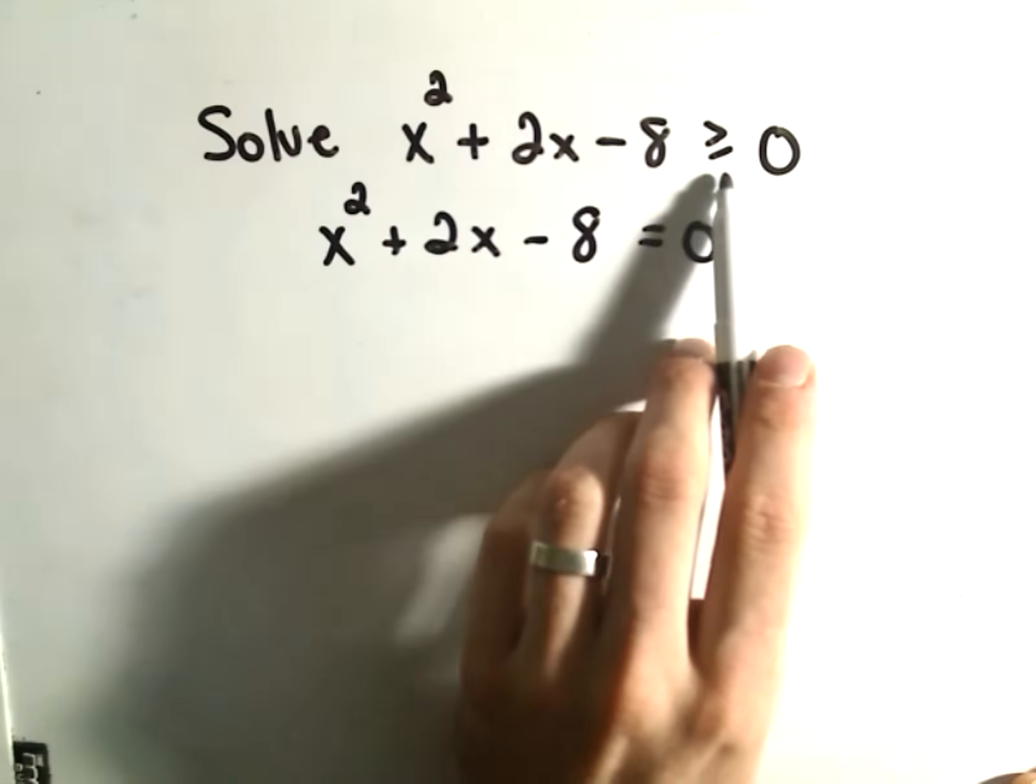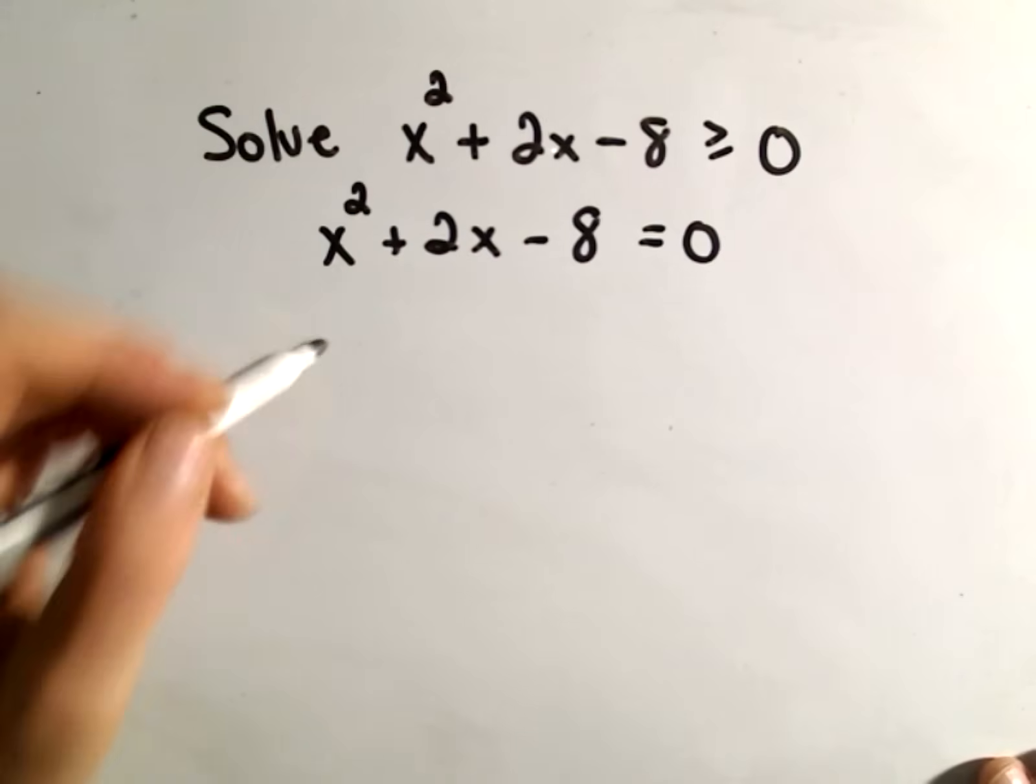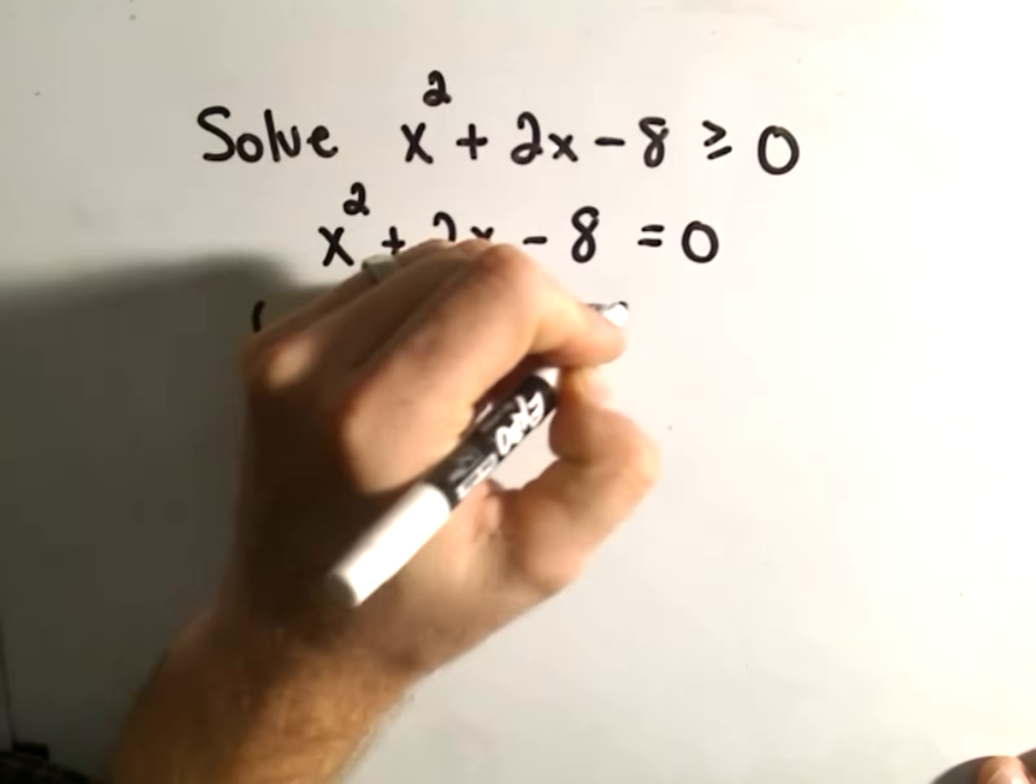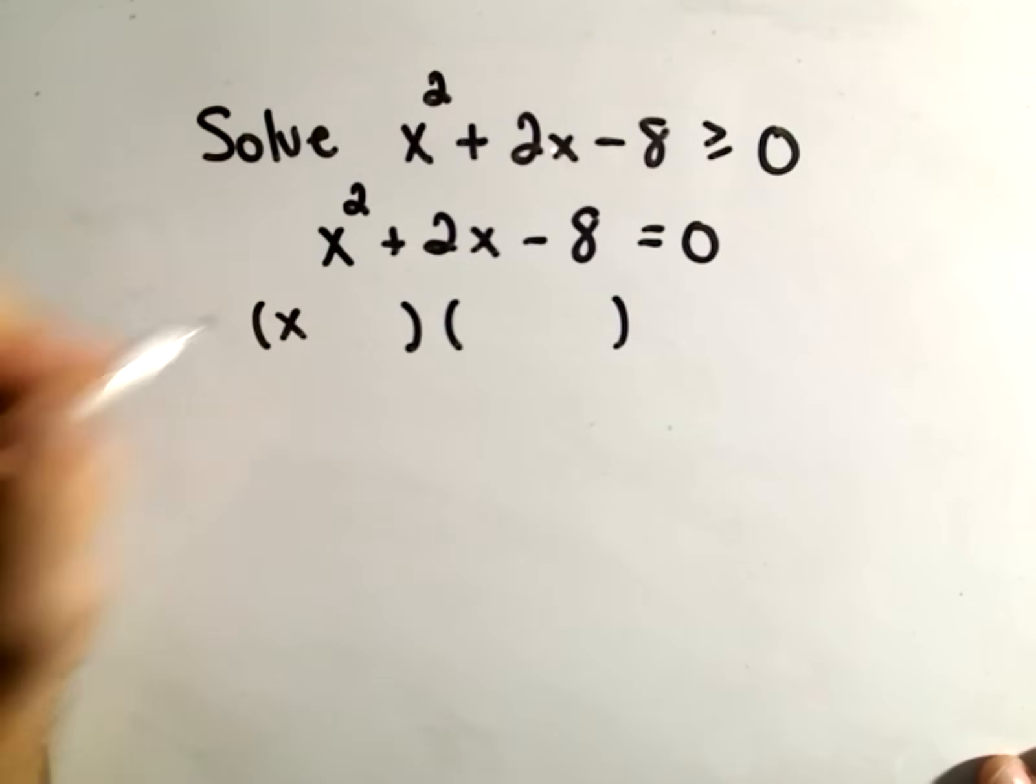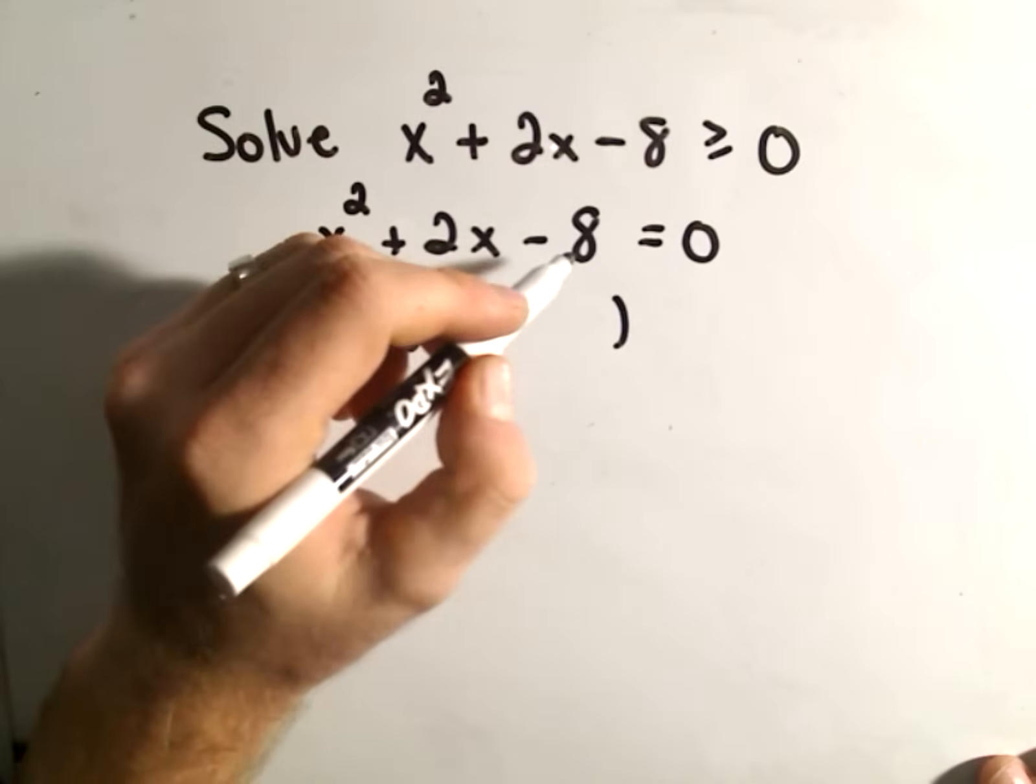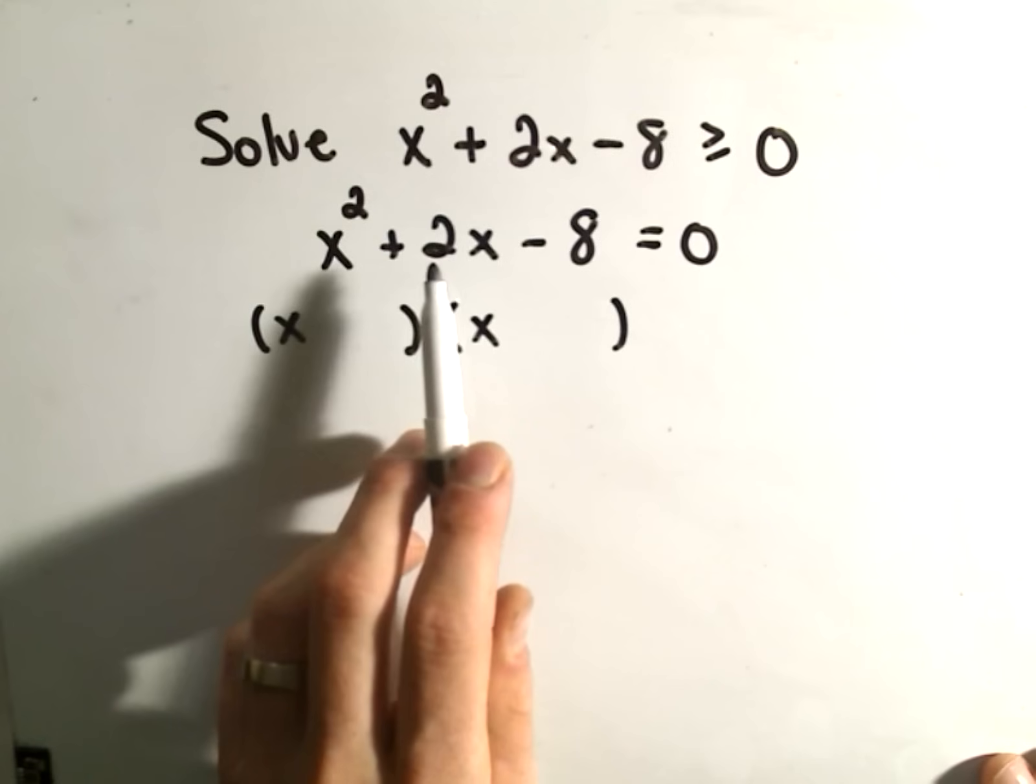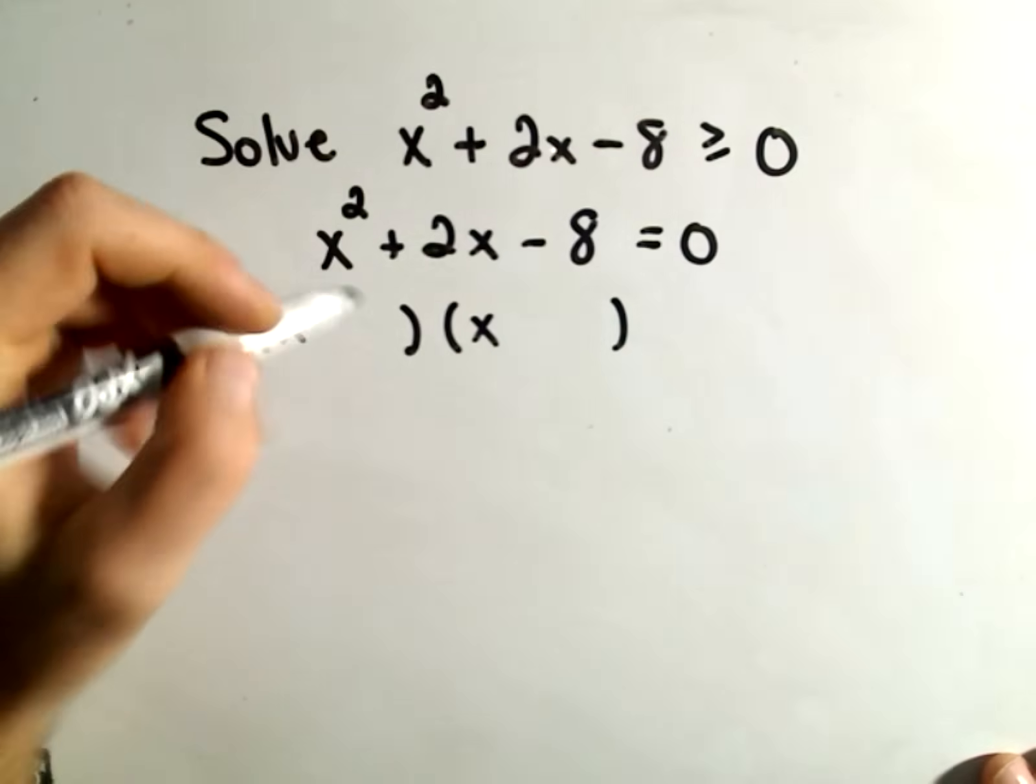That doesn't matter what your inequality is, just make it equal to 0. And then I think we can factor this one. So let's see, we'll have x and x. We need two numbers that multiply to negative 8, but add up to positive 2.